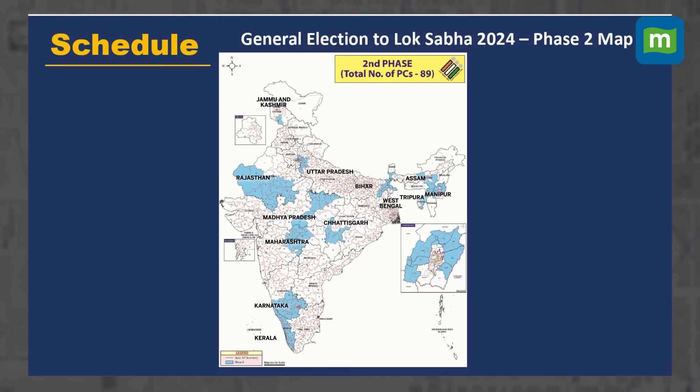Under phase 2, constituencies of Jammu and Kashmir, Rajasthan, Uttar Pradesh, Madhya Pradesh, Maharashtra, Chhattisgarh, Bihar, West Bengal, Tripura, Assam, Manipur, Karnataka and Kerala will witness polling.